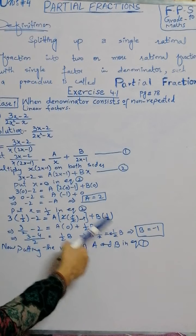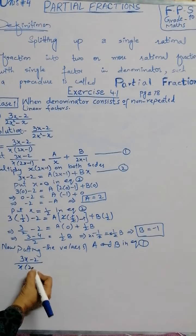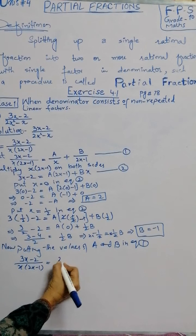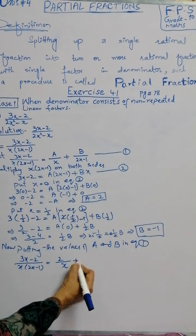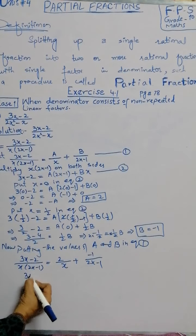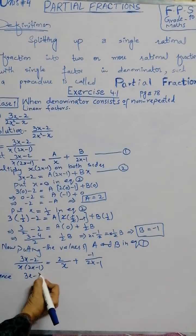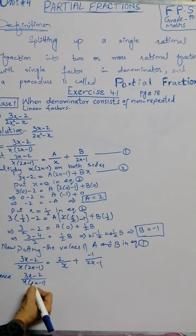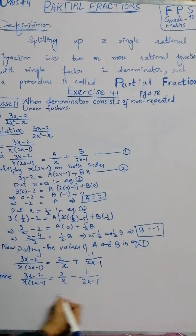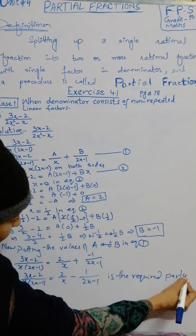Now putting the values of A and B in equation 1, this is the final step. Put all the letter values into equation 1. Left side: 3x minus 2 over x times 2x minus 1 equals A, the value of A is 2, so we write 2 over x plus the value of B is minus 1 over 2x minus 1. Hence, 3x minus 2 over x times 2x minus 1 equals 2 by x minus 1 by 2x minus 1. This is the required partial fraction.